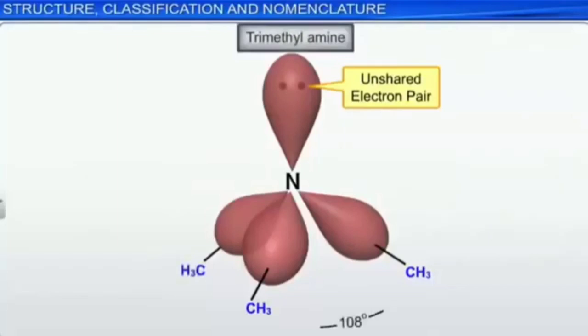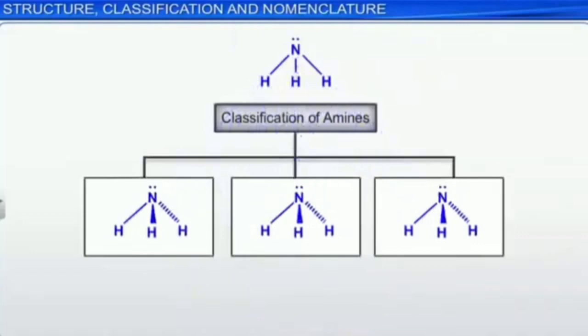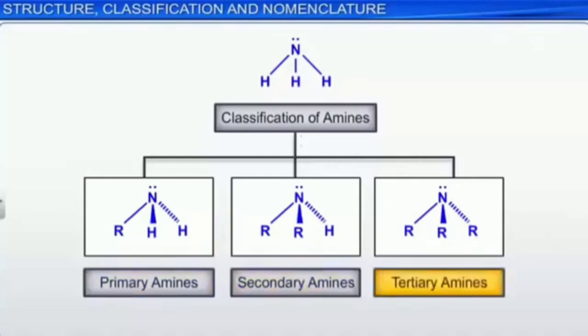Next, classification of amines. On the basis of the replacement of hydrogen atoms in ammonia, amines are classified into three types: primary amines, secondary amines, and tertiary amines. In primary amines, one hydrogen atom is replaced by one alkyl or aryl group. Two hydrogen atoms are replaced in secondary amines. Three hydrogen atoms are replaced in tertiary amines.